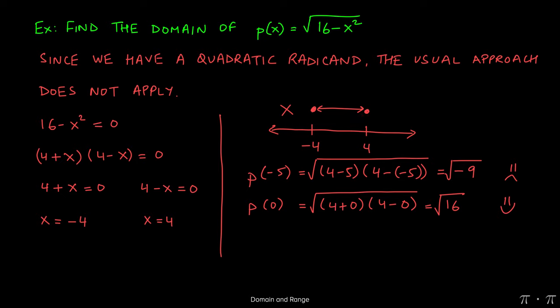Lastly, we pick a number to the right of 4, say 5. And if I plug 5 into my equation, I get a negative number again as the radicand. I can't do this. I cannot find the square root of a negative 9. So that gets a little sad face and a cross here.